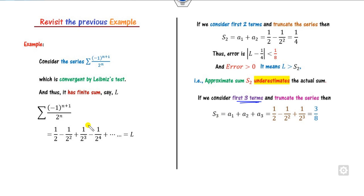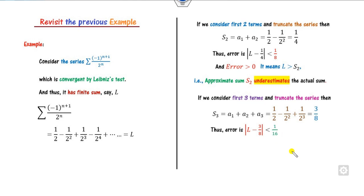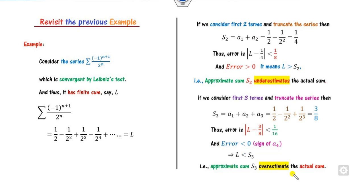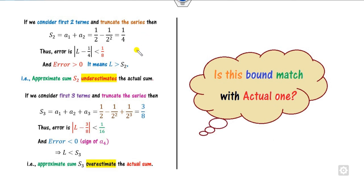On the other hand, if you consider the three-term series, the error bound will be the next unused term, which is 1/16. The sign of this next term is negative, which means L minus 3/8 is less than 0, so the error is negative in nature — the approximate sum overestimates the actual sum. Now whether these bounds actually match — we are still unknown about the actual value of L — so how can we verify them? We will compare with the same example.